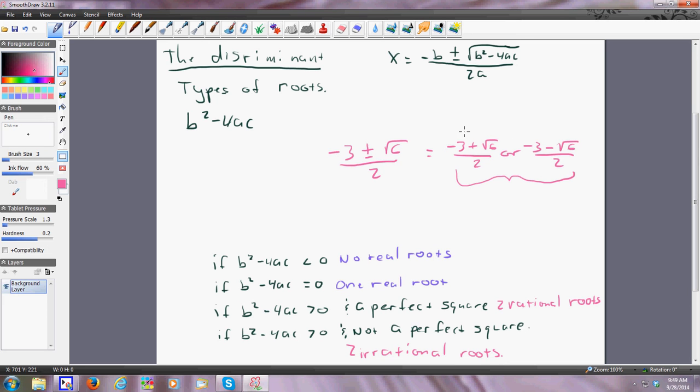Otherwise, if you're just looking for the actual roots, this answer and this answer are not only perfectly acceptable, they're perfectly correct. A decimal approximation is just that. It's an approximation. So, that's how you can use the discriminant to determine how many and what type of roots you have for a quadratic.